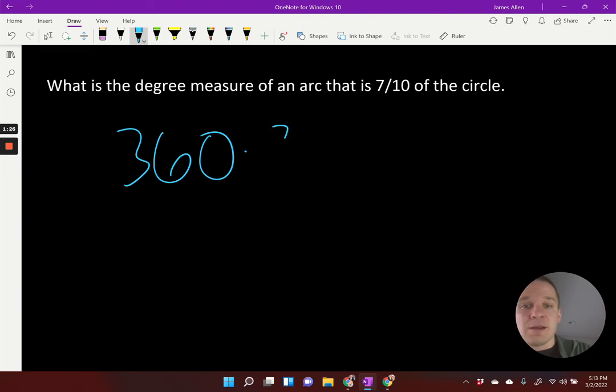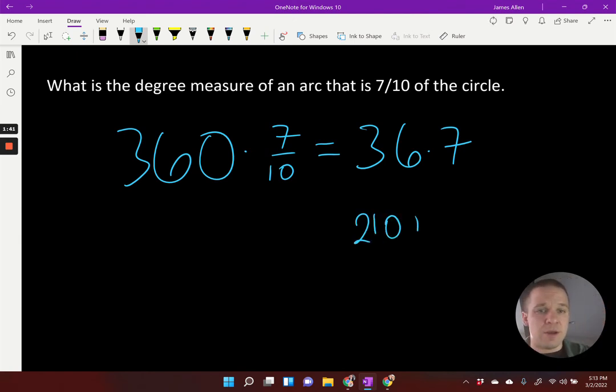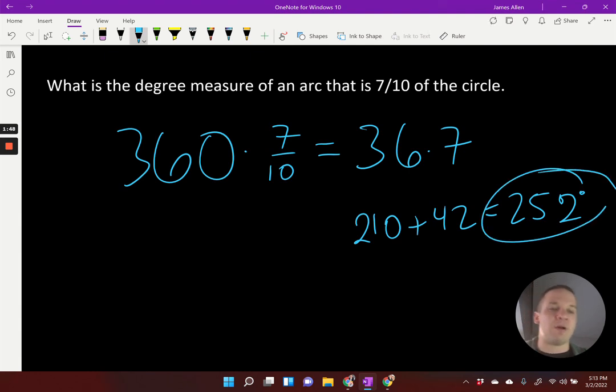If I want seven-tenths of that, I'm gonna multiply by seven-tenths. So if we want to mental math this thing, I can divide by 10 first and that's going to leave me with 36 times 7, and then that's 252. That's how you mental math that bad boy right there.